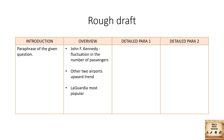In the overview, I'm going to mention the striking key factors: John F. Kennedy Airport had fluctuations in the number of passengers, while in the other two airports there was an upward trend. Finally, I'll also add that LaGuardia was the most popular airport.